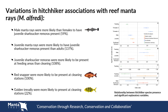In contrast, male manta rays were 59% more likely than females to have juvenile shark sucker remoras present. Juvenile shark suckers were 137% more likely to be present on juvenile manta rays than adults, and juvenile remoras were 108% more likely to be at feeding areas than at cleaning stations, whereas the Red Snapper and Golden Trevally were more likely to be present at cleaning stations than at feeding areas.